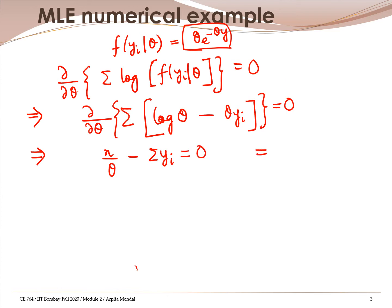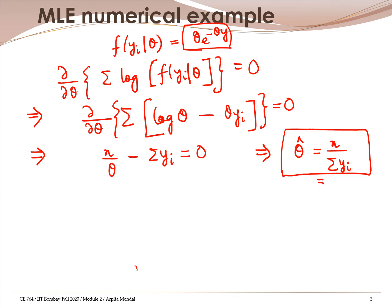This means we get theta hat, the MLE estimate. From this equation, we get an expression for theta, which is nothing but n divided by summation of y_i. This gives the expression for the MLE estimator theta hat. When we use the 10 values given in this sample, we sum all the y_i's with n=10, and it turns out to be 0.162. So that's the estimator.